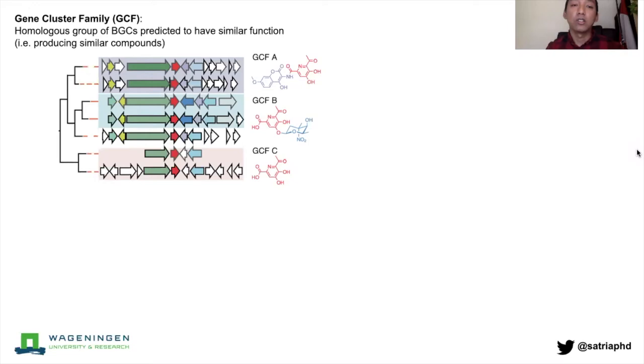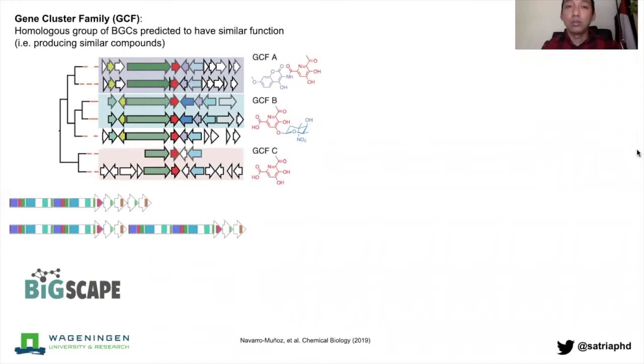One way to do that is using a tool that we previously built called BiGSCAPE. What BiGSCAPE does is for each pair of BGCs, first we perform a pHMM scan on biosynthetic Pfam domains and we measure the number of shared Pfam domains between the two BGCs.